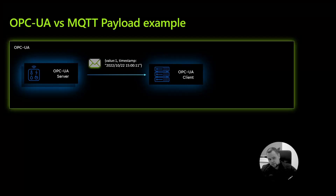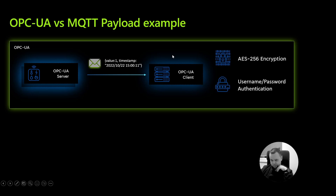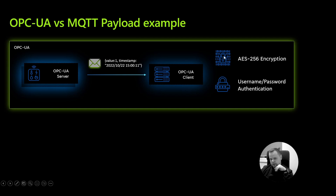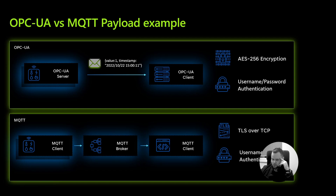Let's start from the beginning. We have OPC UA and MQTT clients communicating, and we wanted to create a sample example to measure things. What you see here is OPC UA server and client communication — the server sends packets with a sample JSON message containing a value and a timestamp, using AES-256 encryption and username/password authentication. On the MQTT side, we have the client, publisher, and broker, also using username/password authentication and TLS over TCP for security parity.